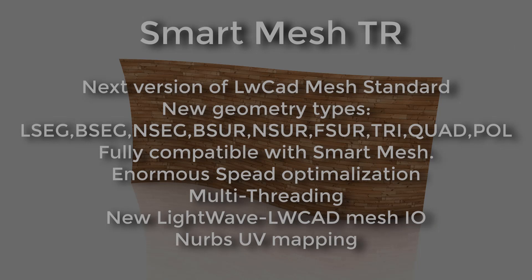SmartMesh TR is the next version of LightwaveCat SmartMesh Standard which was originally introduced with LightwaveCat 5, and it brought NURPS surfaces into Lightwave. This is the next iteration which is solving a lot of previous problems and adding a lot of optimizations and new features.